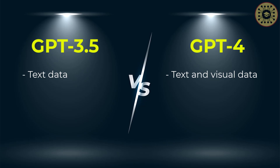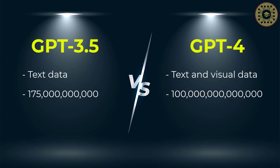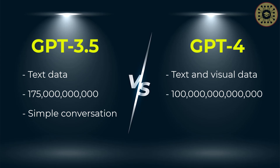This is the biggest difference between the two models. As for the number of parameters, GPT-3 had 175 billion parameters, while GPT-4 has 100 trillion parameters — making it about 500 times larger than GPT-3. In terms of conversation, there is no noticeable difference for simple exchanges, but for complex conversations GPT-4 is excellent. GPT-4 is more reliable, creative, and able to handle much more nuanced instructions than GPT-3.5, so it works great with text data as well.